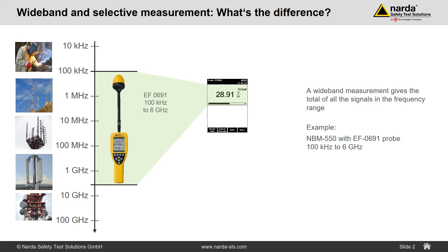The result of a wideband measurement made with the Nader NBM is all of the services together. Regardless of how much power is radiated by TV, FM radio, or cellular network transmitters, or how many transmitters are present, you will only get one single result — the total for all services. Just like your own body, it doesn't matter if it is FM or TV or both. The only thing that counts is the total.